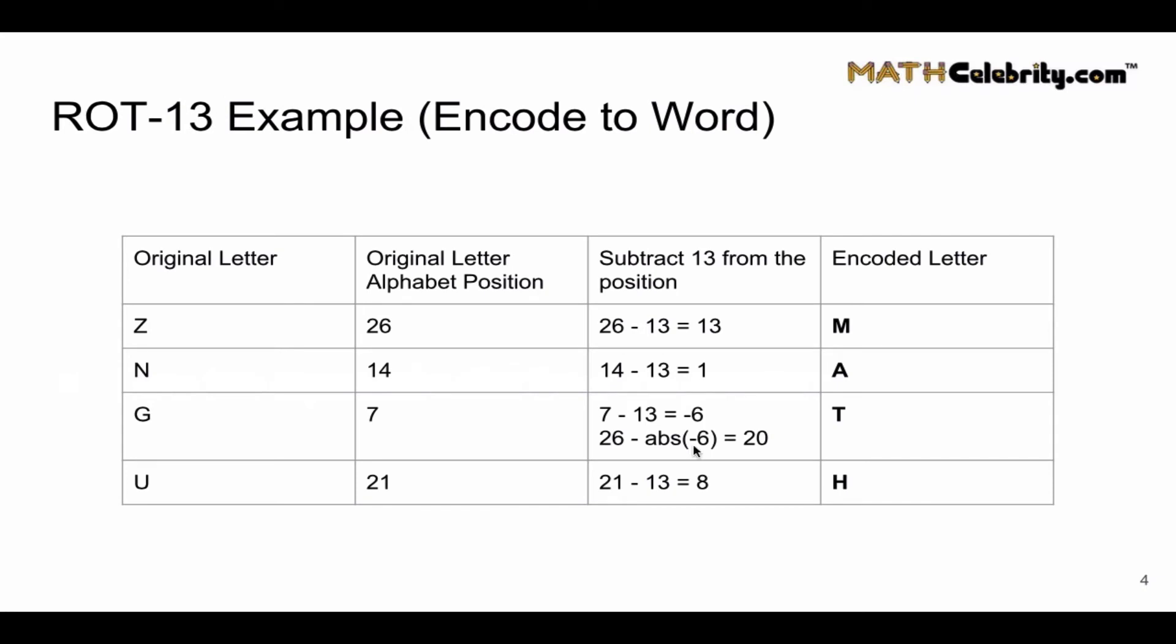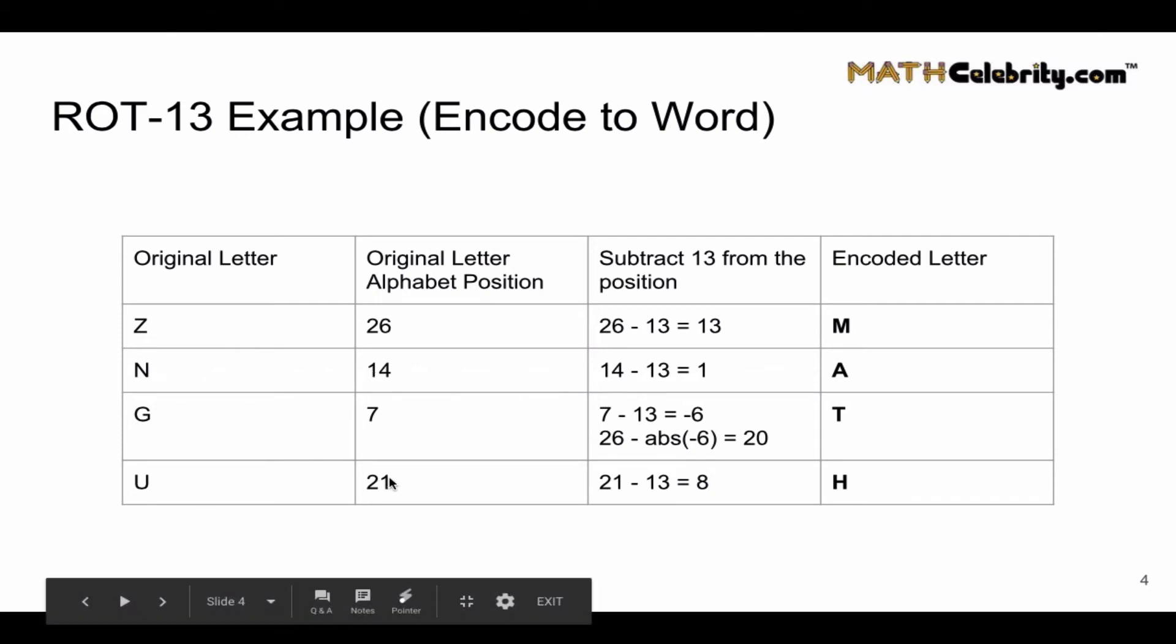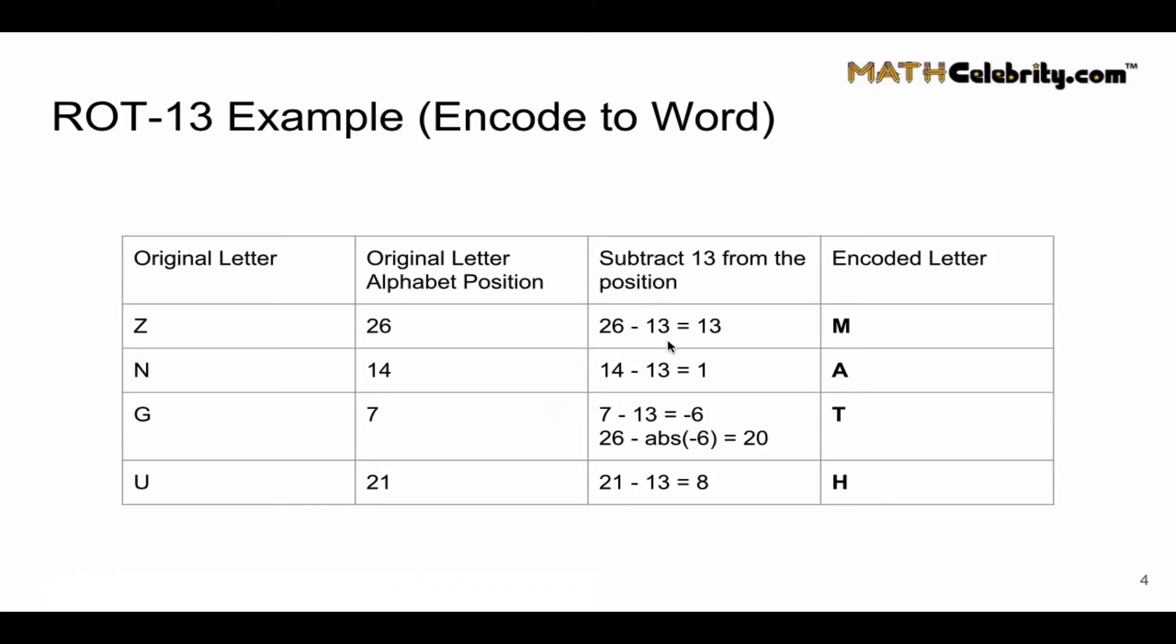So let's go backwards with ZNGU. Z is 26th position, N is 14, G is 7, and U is 21. We want to subtract 13 from each of these positions. As you can see, for Z, N, and U, we're within the 1 to 26 range. On G though, we've got a negative number.